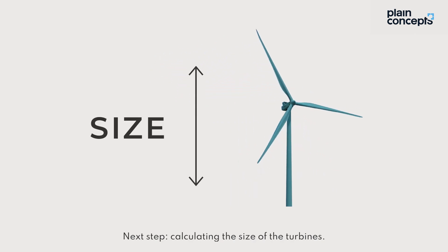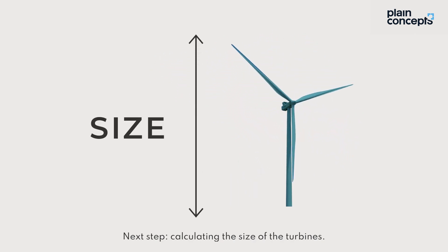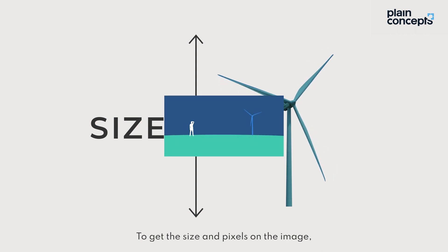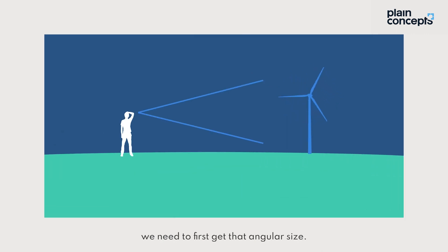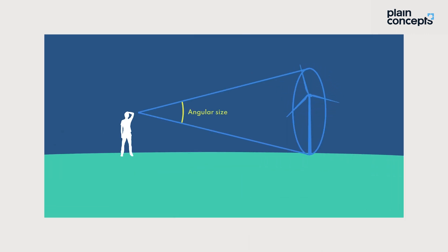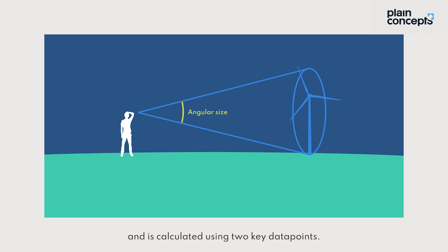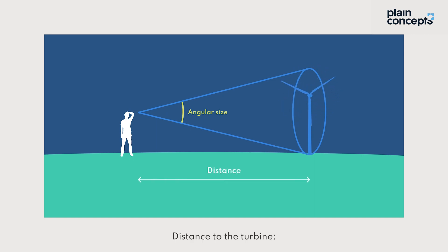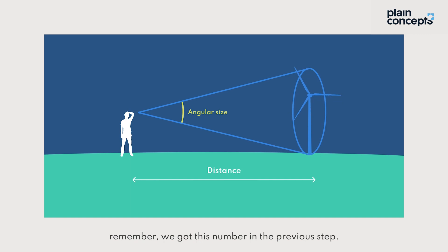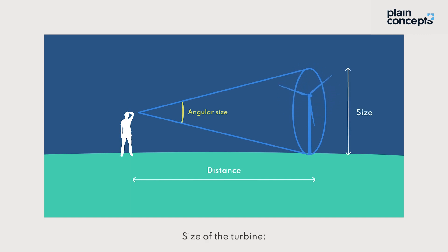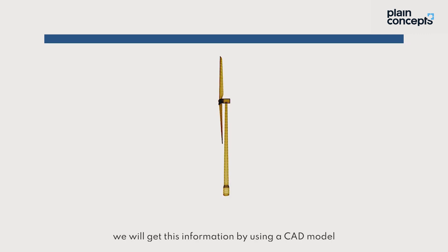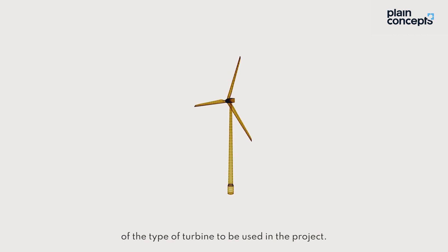Next step: calculating the size of the turbines. To get the size in pixels on the image, we need to first get their angular size. The angular size shows the size in degrees of the object, and is calculated using two key data points: the distance to the turbine — which we got in the previous step — and the size of the turbine, obtained by using a CAD model of the type of turbine to be used in the project.